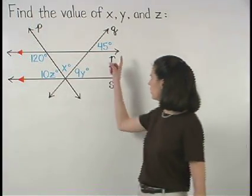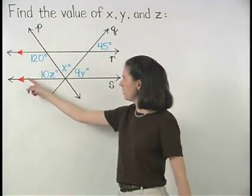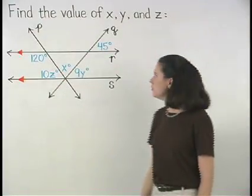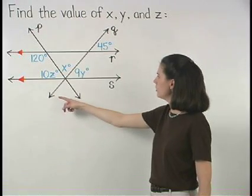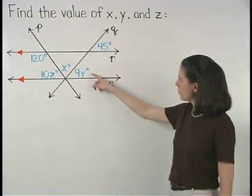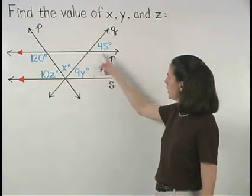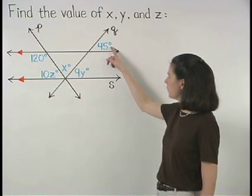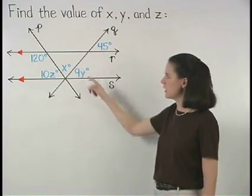Notice that lines r and s are parallel, and using the transversal q, we can see that the angle marked as 9y and the angle marked as 45 are corresponding angles.